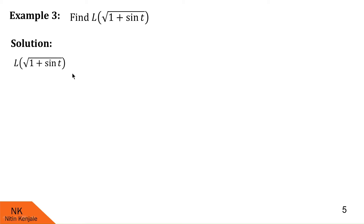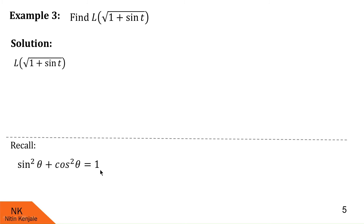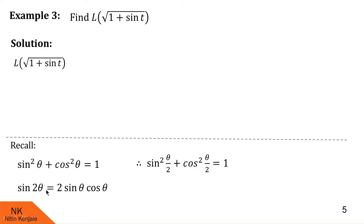We want to obtain Laplace of √(1 + sint), and for that we will first split these terms using trigonometric identities. First identity: sin²θ + cos²θ = 1. Taking θ as θ/2: sin²(t/2) + cos²(t/2) = 1. Similarly, sin2θ = 2sinθcosθ, which gives sint = 2sin(t/2)cos(t/2).